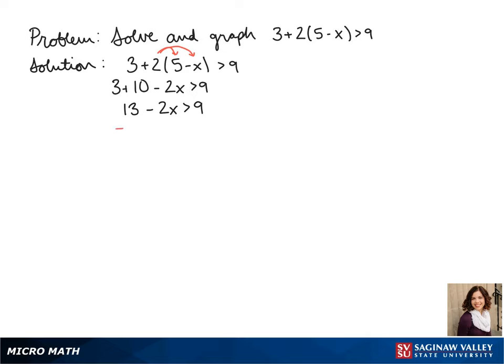We subtract 13 to the other side and we get negative 2x is greater than negative 4. Next we divide both sides by negative 2, so we get x is less than positive 2.